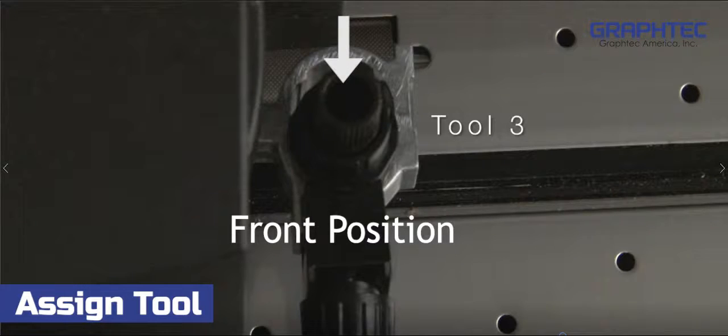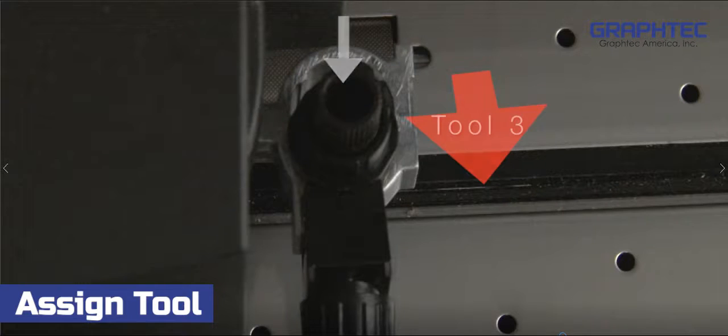Remember that the front position places the tool over a channel, which is good for cutting completely through the liner backing for making decals that can be popped out.